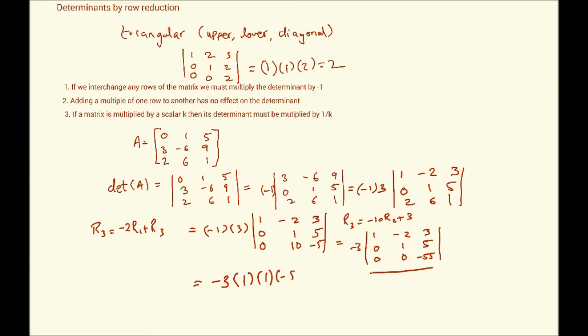Into 1, into minus 55, which means the result is 165. And that is the determinant of the matrix we're looking for. So, this is how we use row reduction to calculate the determinant of a matrix.